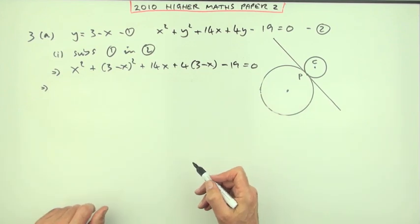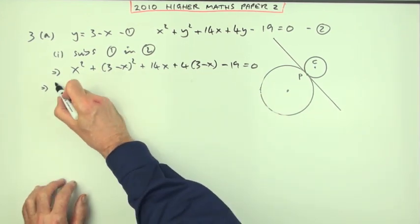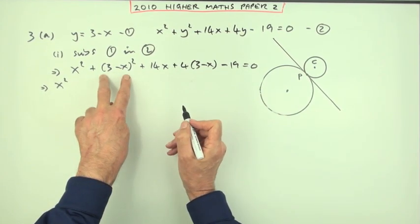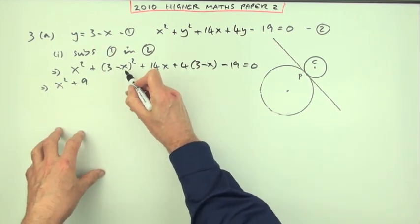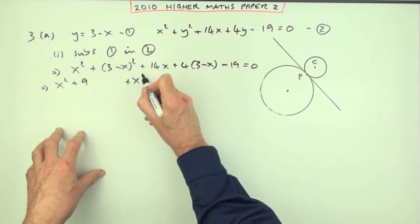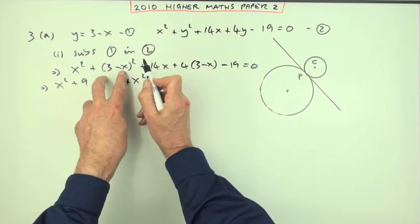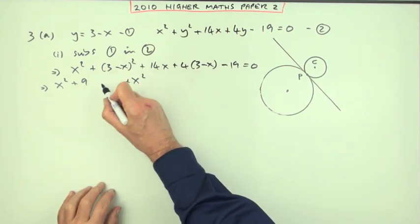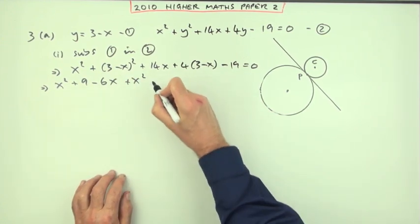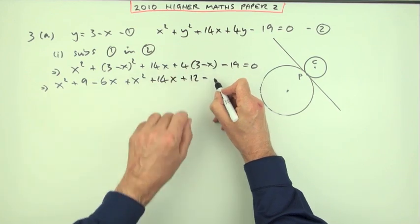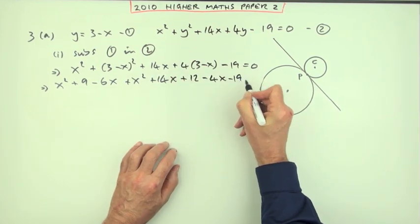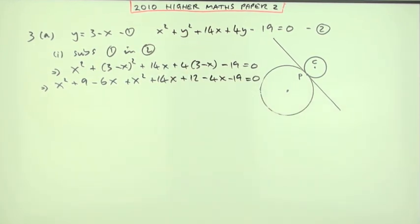Might need a bit more room to expand the brackets. So that's x squared. Square the bracket. Simple pattern. Square the first. 3 squared is 9. Square the last. Always positive. That's an x squared. Twice the product. The product is negative 3x. Doubled negative 6x. Plus 14x. Plus 4 times 3 is 12. Minus 4x. Minus the 19.